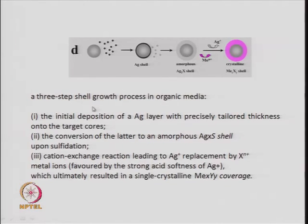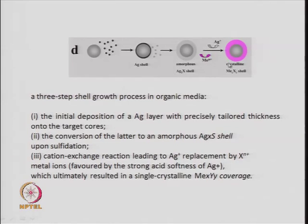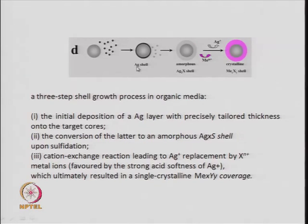A three-step shell growth process in organic media involves making a silver shell on a particle by adding silver nitrate. This forms an initial shell which is then sulfidized to give an amorphous silver sulfide shell. An alkylating agent is added and cation exchange takes place, with the silver removed; the resulting shell is favored by the strong soft-acid character of Ag⁺.